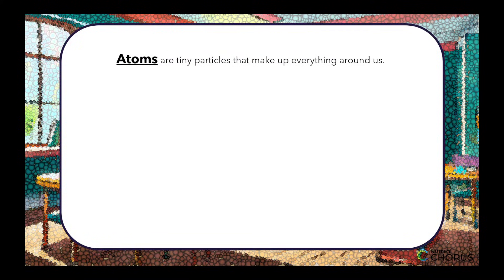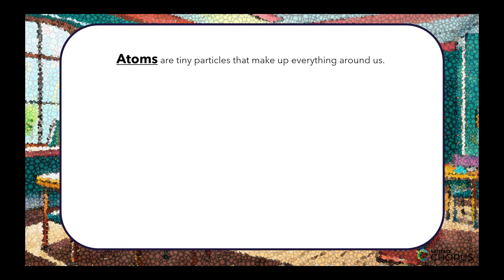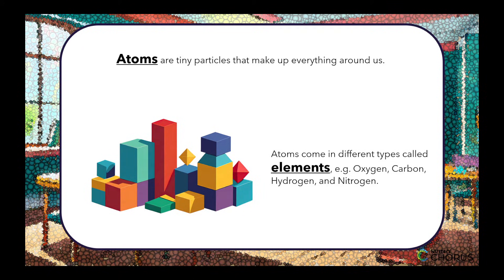Atoms are tiny particles that make up everything around us. Think of them like the pieces in a set of building blocks. Just like those blocks come in different colors and shapes, atoms also come in different types called elements.